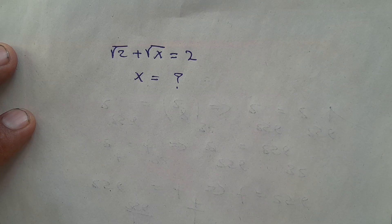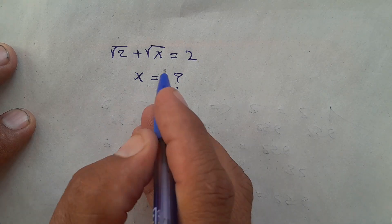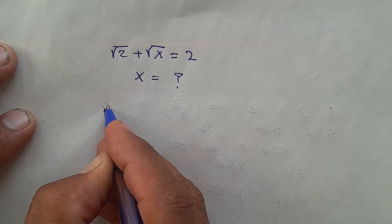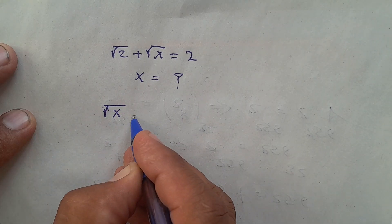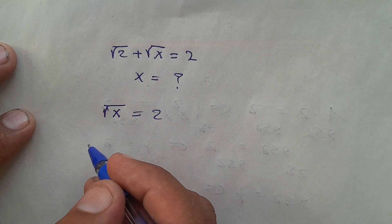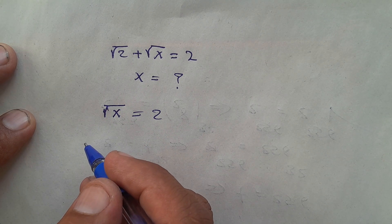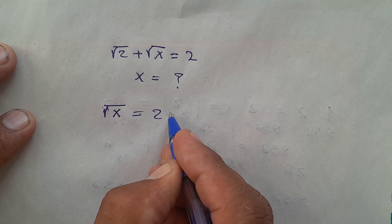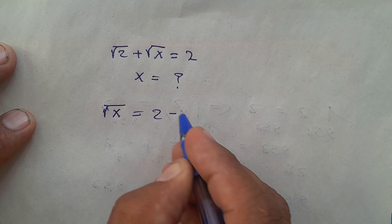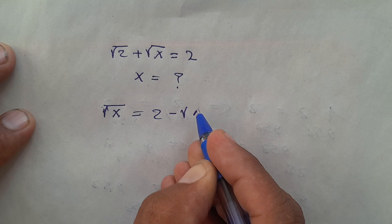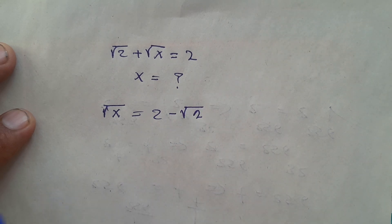First, I take square root of x equals to 2, and I move square root of 2 to the other side of the equation — it becomes negative square root of 2.